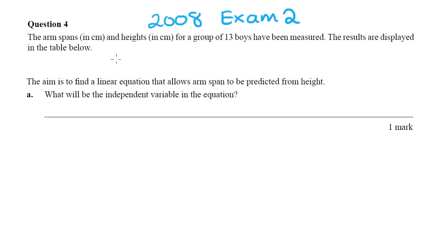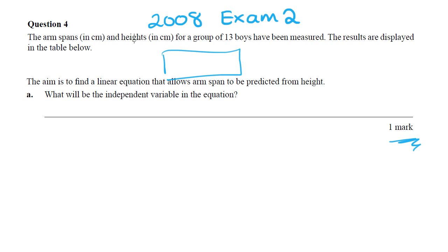The question says: 'The arm span in centimetres and height in centimetres for a group of 13 boys have been measured. The aim is to find a linear equation that allows arm span to be predicted from height. What will the independent variable be in the equation?' Does it make sense to say arm span is dependent upon height? That makes sense. Your height being dependent upon your arm span? Probably not. So arm span depends on height — arm span is the dependent variable and height is the independent variable.